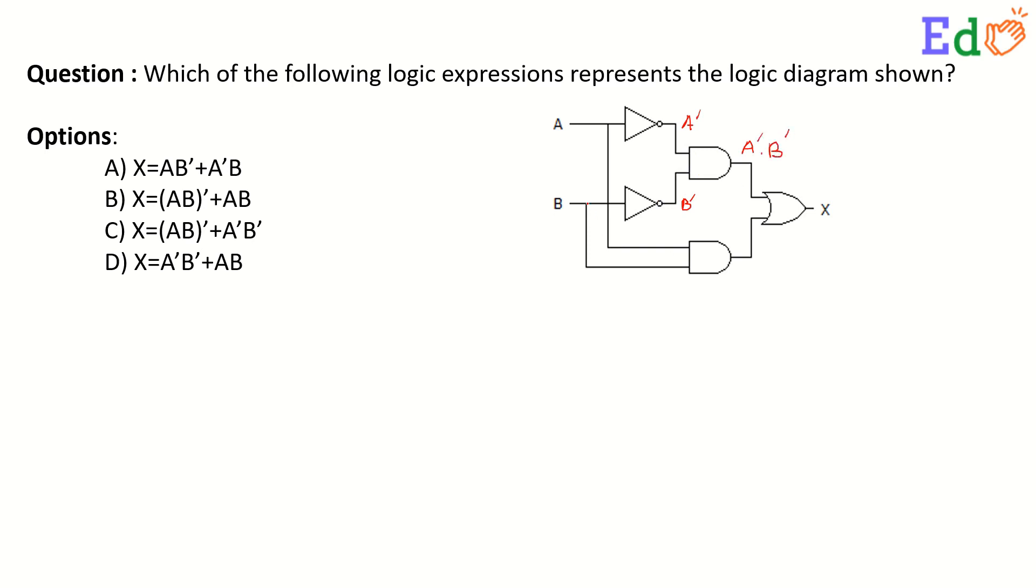Here again we have A and B coming to the AND gate directly. The output of this AND gate is A dot B. This A complement dot B complement and A dot B are passed through this OR gate. So the output should be A complement dot B complement or AB.